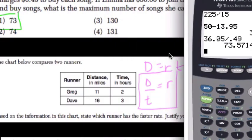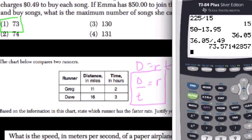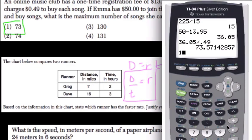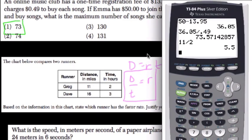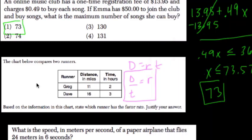In Greg's case, distance 11 divided by the time, 2. His rate was 5.5 miles per hour.